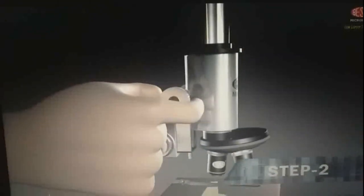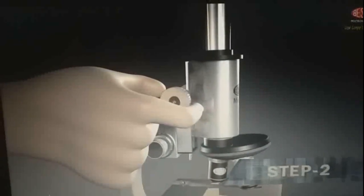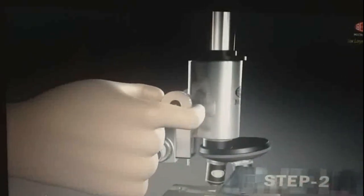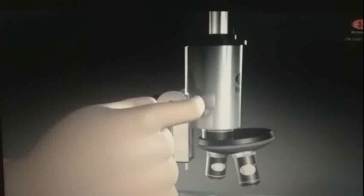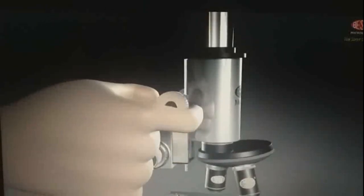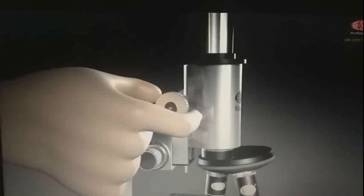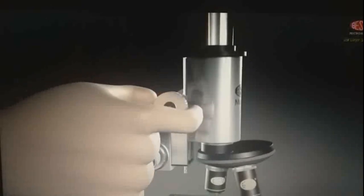Step 2. Make sure low power objective is in place over the hole in the stage. Use the coarse adjustment knob to raise objective. See here, when you move it clockwise, it will go downward. When you move it anticlockwise, it will move up.